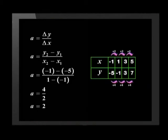We can write the formula for gradient like this. So a is the change in y divided by the change in x. That's the same as saying y2 minus y1 divided by x2 minus x1. So if we use the first two x and y values from the table, that's negative 1 minus negative 5, all divided by 1 minus negative 1. Be careful with your plus and minus signs here. We get an answer of 2 which is the gradient of the line.